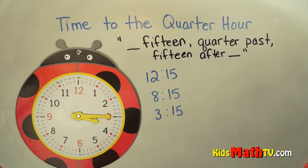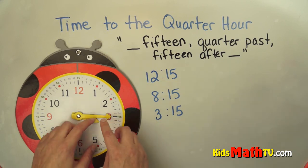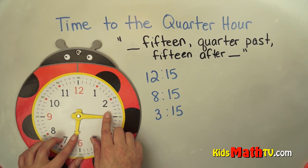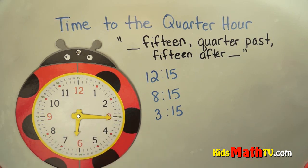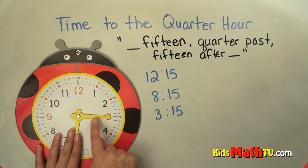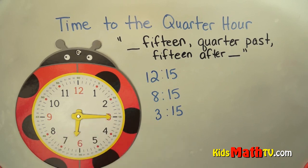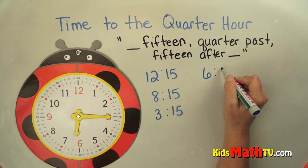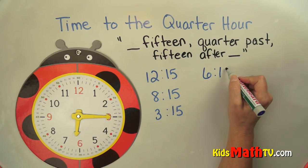Let's try just a couple more. How about this one — what would this be? The hour hand is just a little bit past the 6 and the minute hand is on the 15. So in this case, this would be quarter past 6 or 6:15.